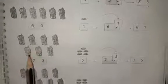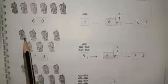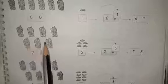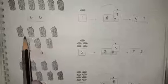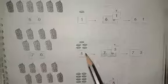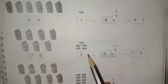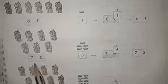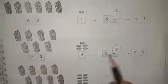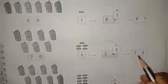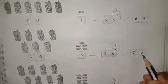How many rolls here? 1, 2, 3, 4, 5, 6, 7 — that's 7 tens, which becomes the number 70. And there are 5 loose biscuits here. So what does the number become? It is 75.